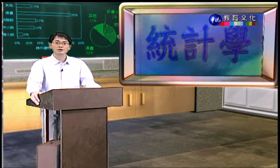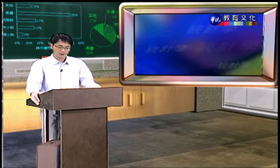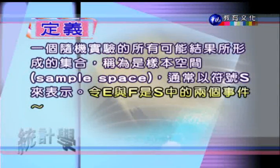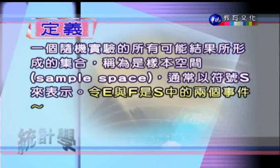接下來轉到另一個主題，有關事件與集合的部分。首先定義一些專有名詞：一個隨機實驗所有可能結果所形成的集合叫樣本空間，通常用符號 S 來表示。如果令 E 與 F 代表 S 裡面的兩個事件，這兩個事件之間會有三種關係。